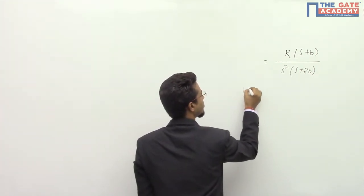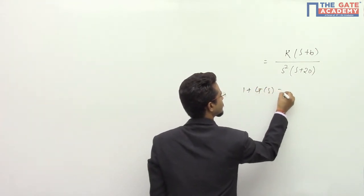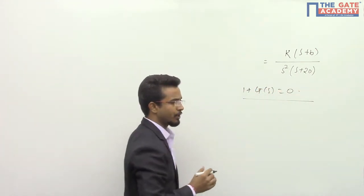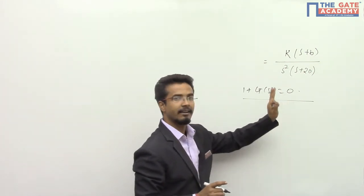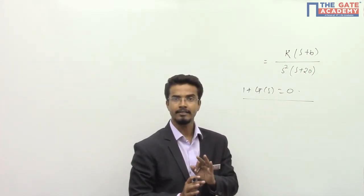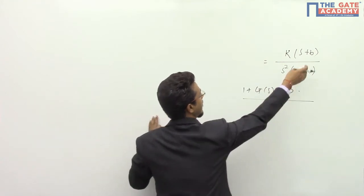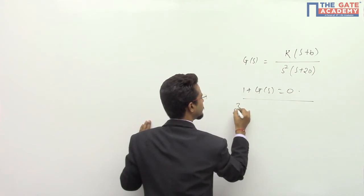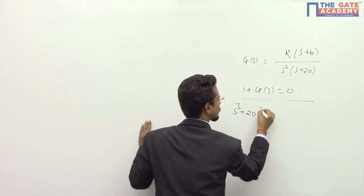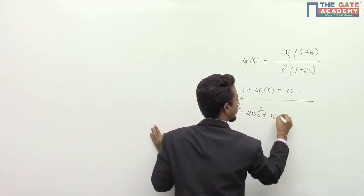First, calculating 1 plus G of s equals 0, because they are saying unity feedback, so H of s I have taken as 1. So if I calculate from here, this is value of G of s: s cube plus 20 s square plus K s plus K B equals 0.